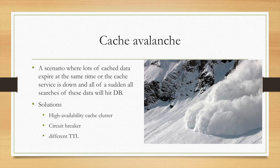The third challenge is cache avalanche. This is the scenario where a lot of cached data expires at the same time, all the cache service is down, and all of a sudden all searches of their data will hit the database. In the industry, we usually have several solutions. One is using high-availability cache cluster. The second solution is using circuit breaker. It means that if the request to the database gets an exception, and the circuit breaker finds too many exceptions happened, the circuit breaker will break down the request. In this way, this will protect the database to have enough time to recover.